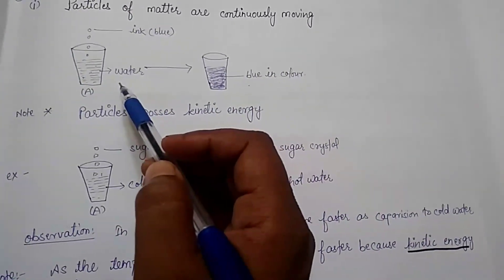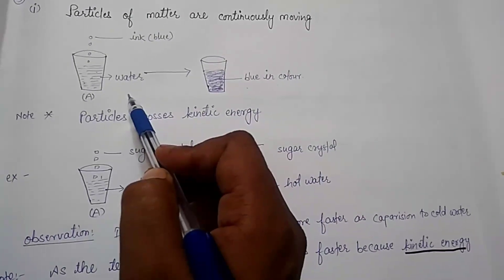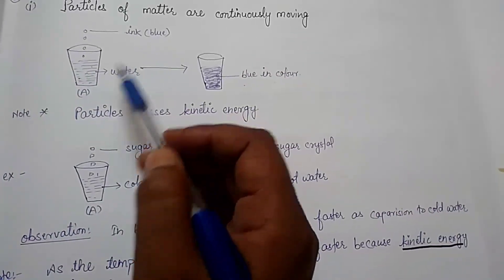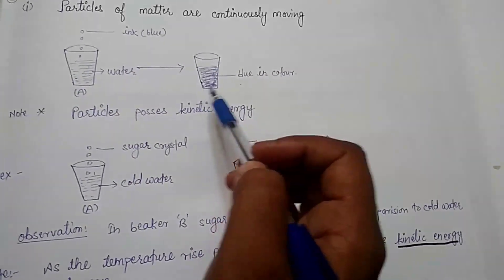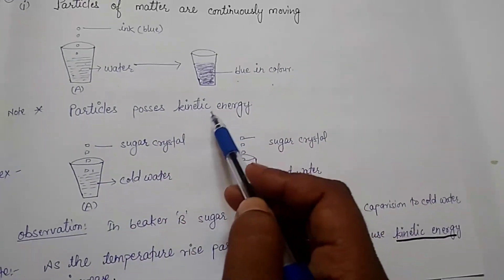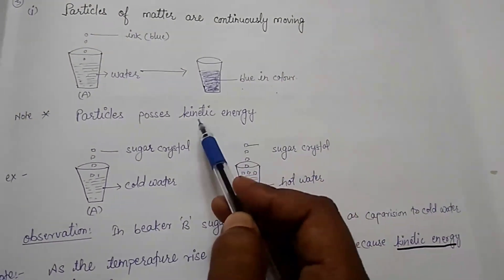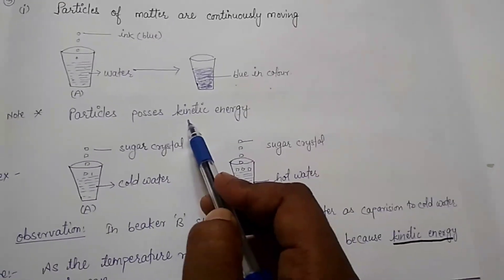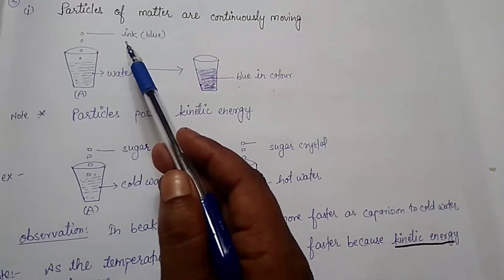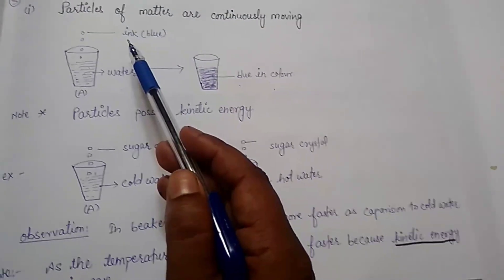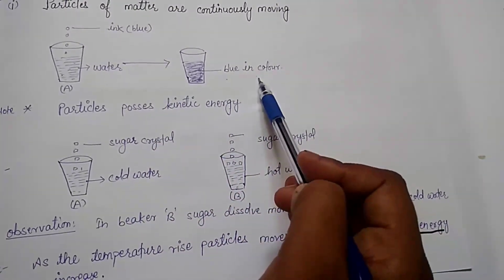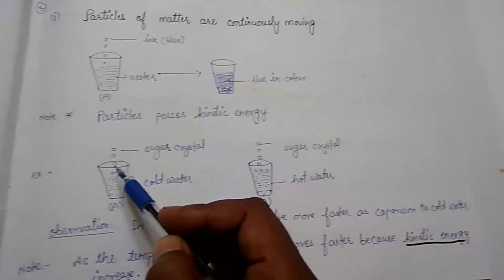We think: how does this happen? There was only a pinch of blue ink, and now the whole water has become blue. Please note: particles possess kinetic energy. It means when we add blue ink into the water, the particles present in the ink start moving in all directions through the water and make the whole water turn blue in color.